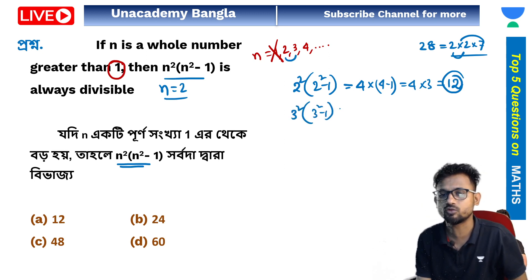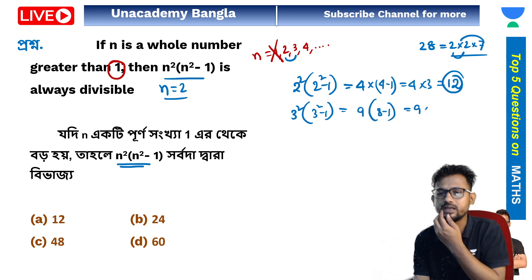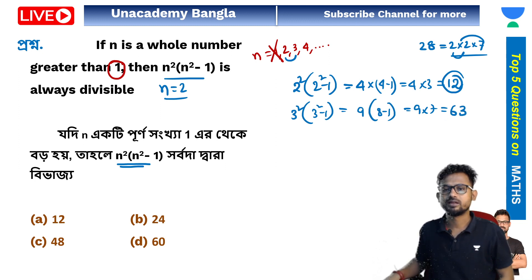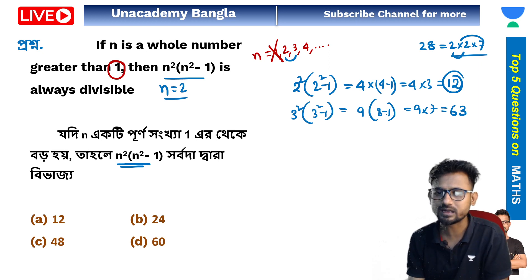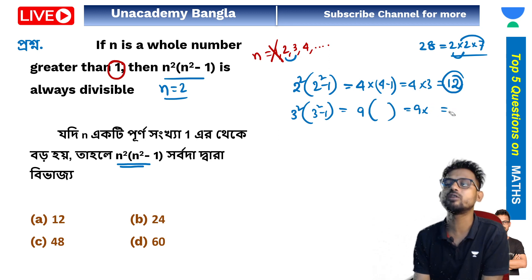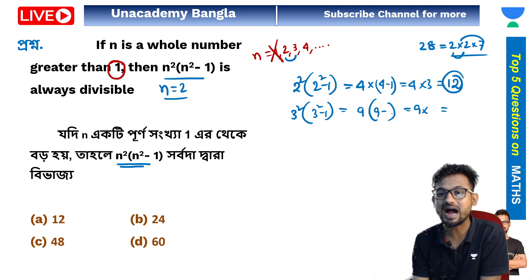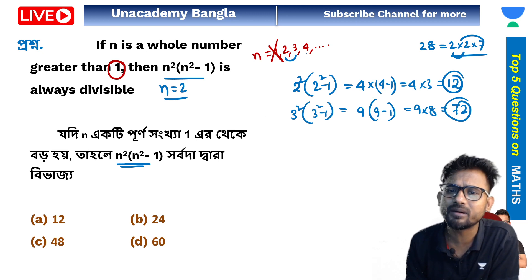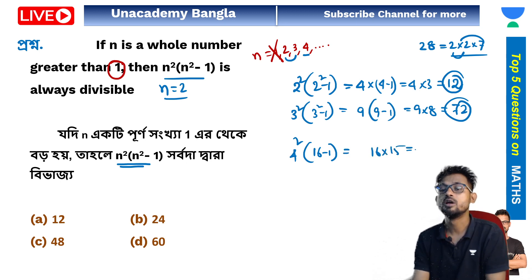3 squared minus 1: 9 minus 1 gives us 8. So we have 9 into 7... and 9 minus 1 equals 8. So the result follows a pattern from consecutive number products.